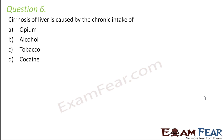Question number six: cirrhosis of liver is caused by the chronic intake of opium, alcohol, tobacco, or cocaine? In cirrhosis, there occurs loss of liver cells and irreversible discoloration of the liver. Marks or patches are seen on the liver, and these changes are irreversible. One of the primary causes of cirrhosis is alcohol.